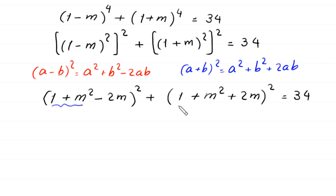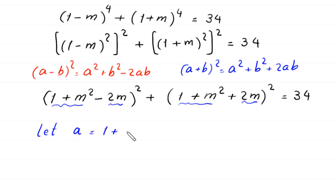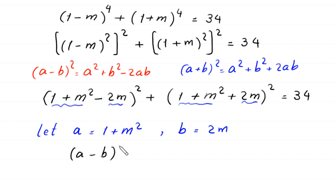Here we have (1 plus m squared) and 2m appearing in both expressions. We let a equal (1 plus m squared) and b equal 2m, and substitute into the equation, which becomes (a minus b) squared plus (a plus b) squared is equal to 34.